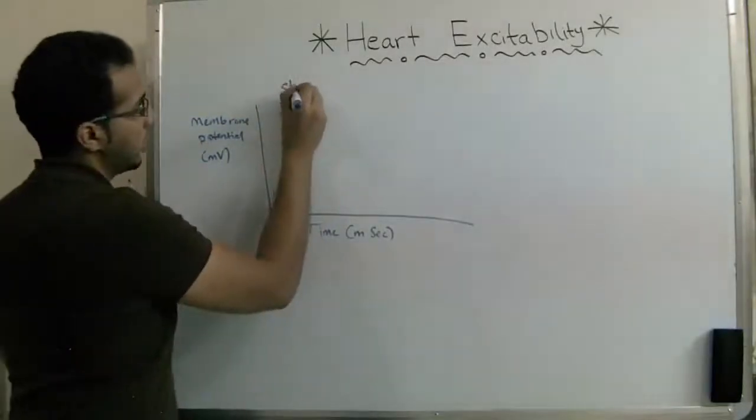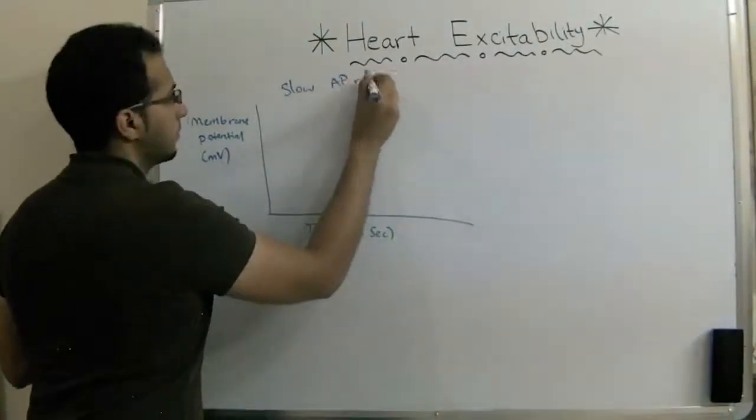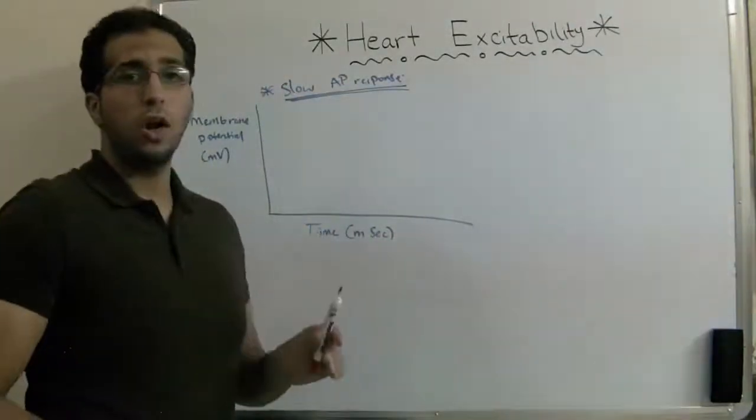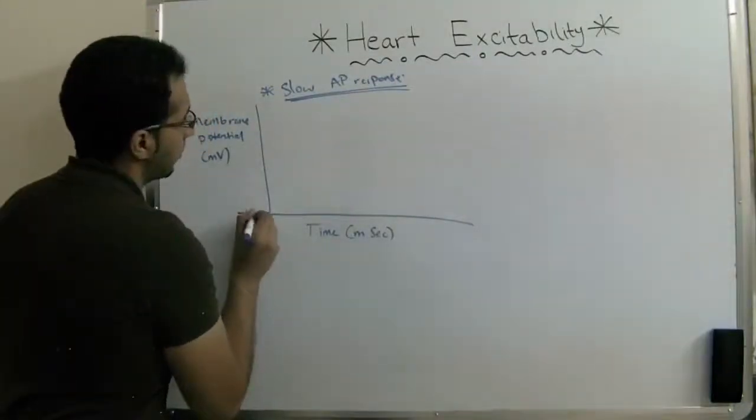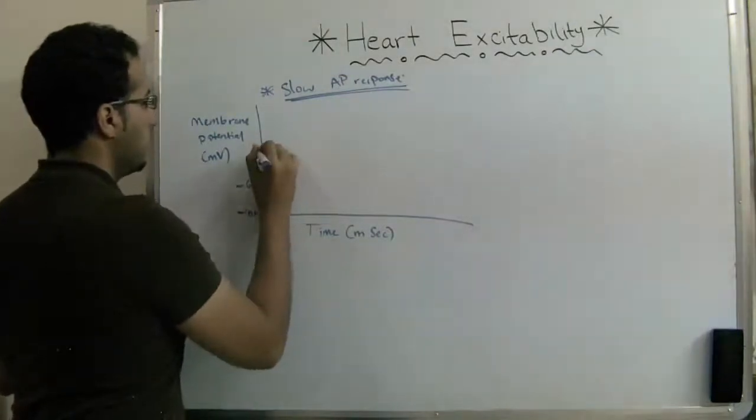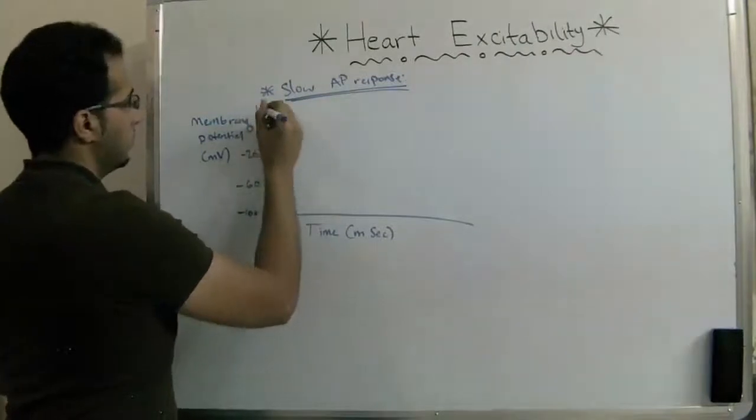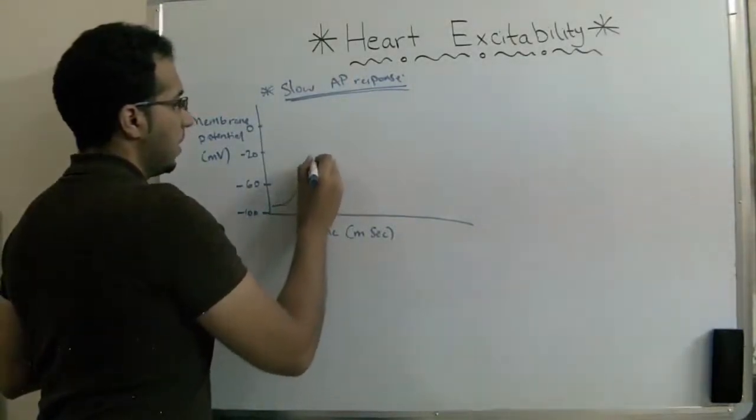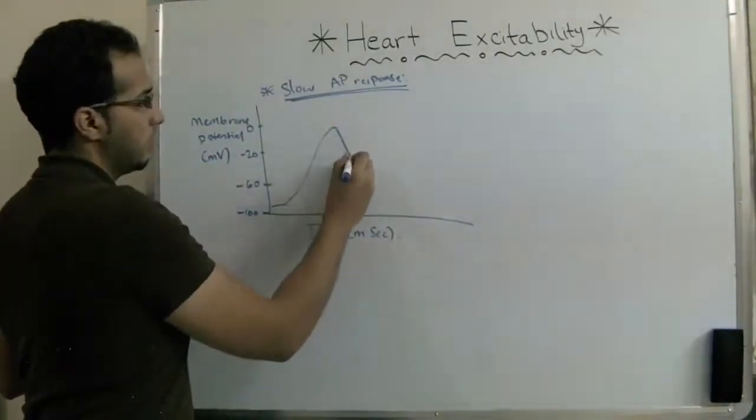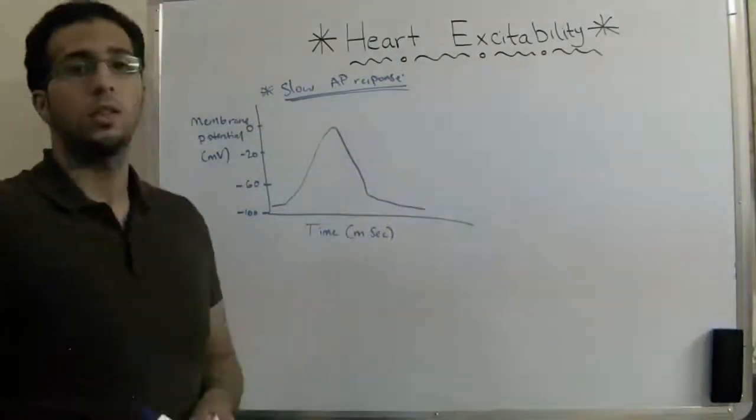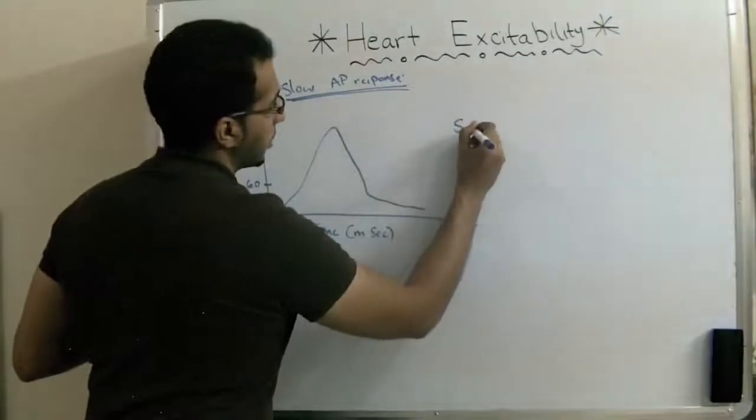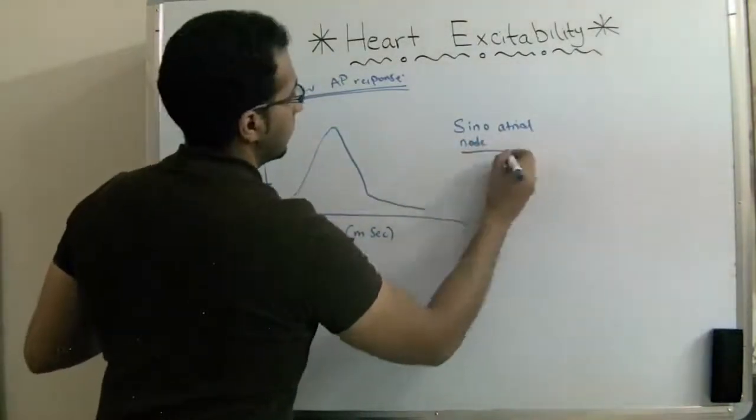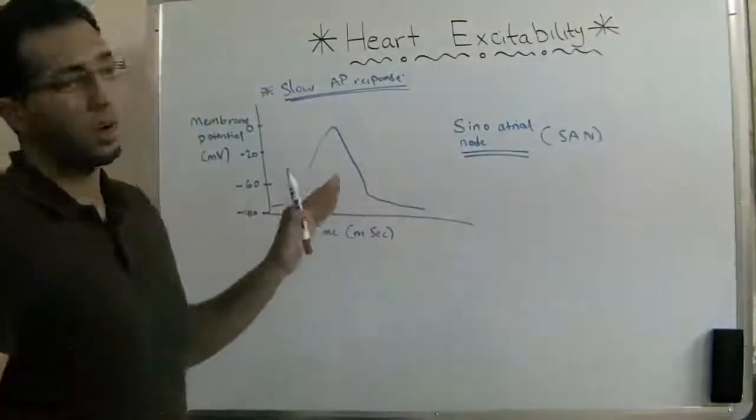So this will be the slow response of action potential. For a slow action potential response, as we know it starts from negative 100. For a slow response, it starts like this and it doesn't have a straight line, it's curved. This is an example of the sinoatrial node action potential, an example of a slow response.